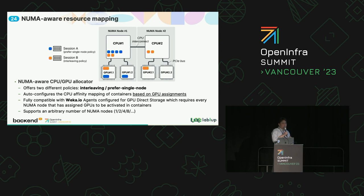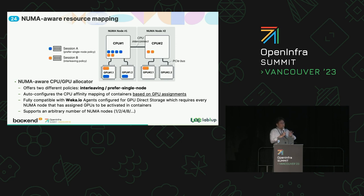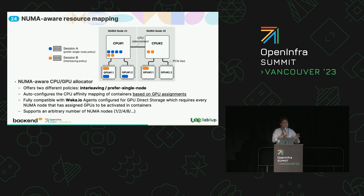For example, with Weka.io or other GPU-direct storage systems, some often require having active CPU cores on the same NUMA node where the assigned GPUs reside. In that case we need to apply the interleaving policy so that we ensure all CPU cores come from the same NUMA node as the allocated GPU set. In other cases, we may want the preferred single node policy to maximize performance by concentrating workloads into a single NUMA node to eliminate memory access delays. We also support an arbitrary number of NUMA nodes — some of our deployments have a full NUMA node configuration, and it works well there as well.